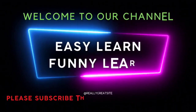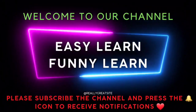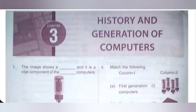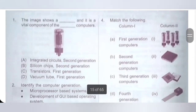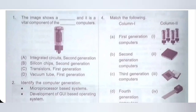Welcome to our channel — Easy Learn, Funny Learn. Please subscribe to the channel and press the bell icon to receive notifications. In this video, we are going to see Chapter 3: History and Generation of Computers from the National Cyber Olympiad NCO MTG Workbook of Class 6. We know 1st generation computers use vacuum tubes, 2nd generation uses transistors, 3rd generation uses integrated circuits, 4th generation uses processors, and 5th generation uses artificial intelligence.